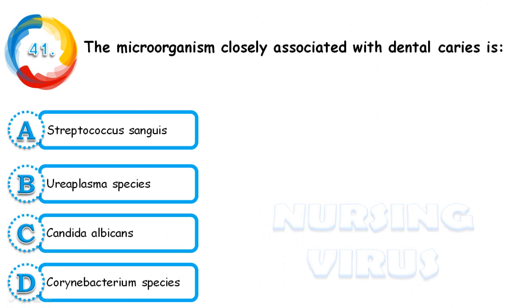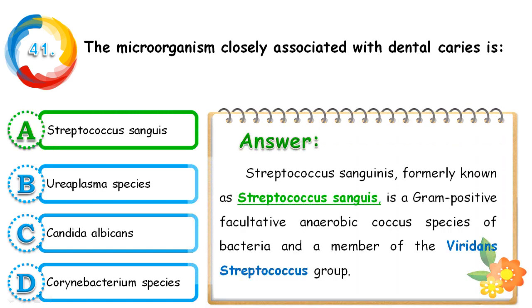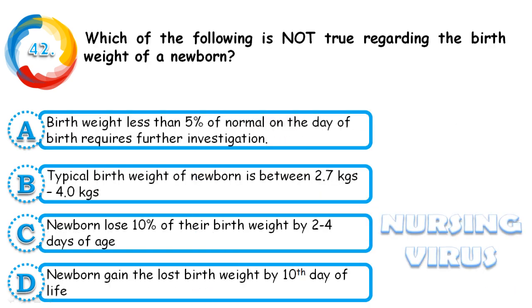Question 41: The microorganism closely associated with dental caries is Streptococcus sanguis, Ureaplasma species, Candida albicans, or Corynebacterium species. The correct answer is Streptococcus sanguis. Streptococcus sanguinis, formerly known as Streptococcus sanguis, is a gram-positive facultative anaerobic coccus and a member of the viridans streptococcus group. It is the main microorganism affecting dental caries.